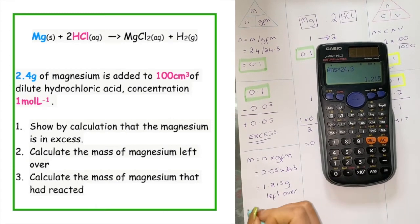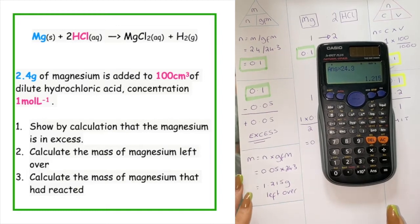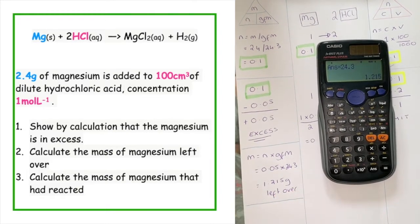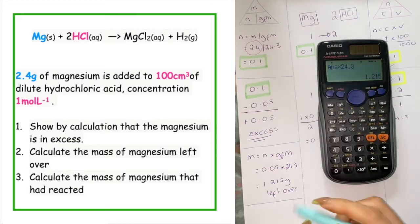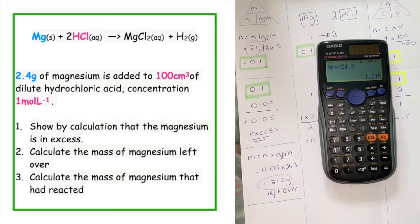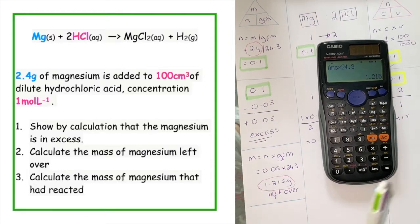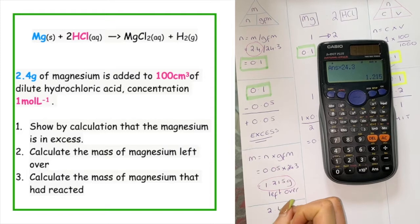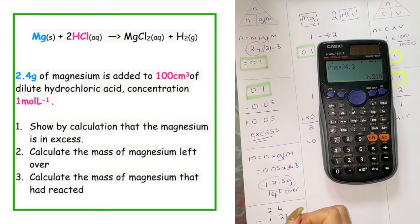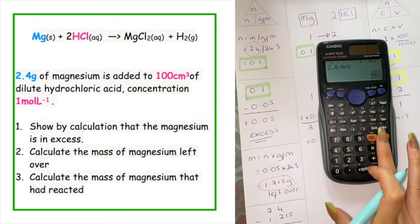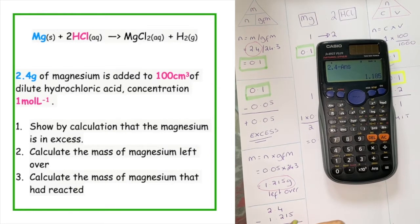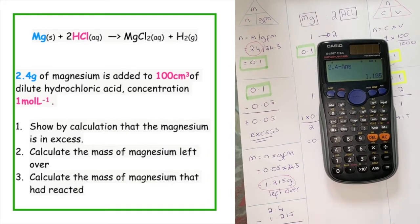Another part of the question could ask how much had reacted. We look at our original mass, which we were given at the beginning: 2.4 grams. We've worked out that 1.215 grams is left over — as a double check, the mass left over should always be less than your original mass. To find how much reacted, we do 2.4 take away 1.215, which gives us 1.185 grams reacted.